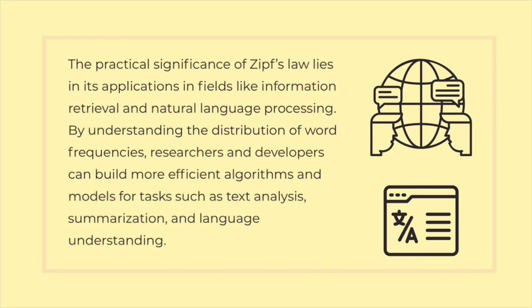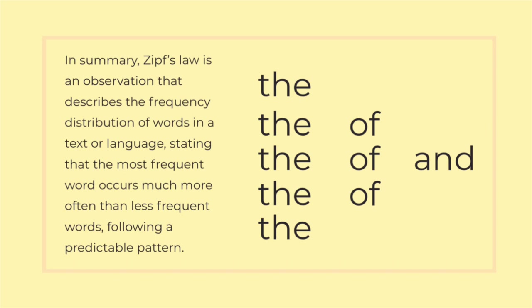In summary, Ziff's Law is an observation that describes the frequency distribution of words in a text or language, stating that the most frequent word occurs much more often than less frequent words, following a predictable pattern.